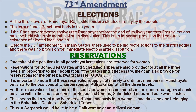All three levels in the panchayat are elected directly by the people. The term of each panchayat body is five years. If the state government dissolves the panchayat before the end of its five-year term, fresh elections must be held within six months of such dissolution. Before this amendment, many states had indirect elections to the district bodies, but now we have direct elections.